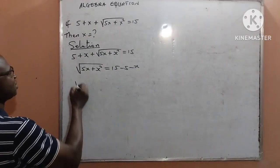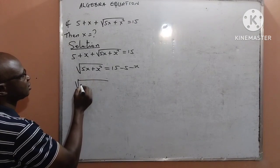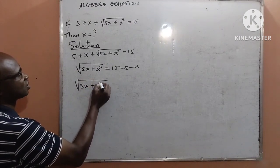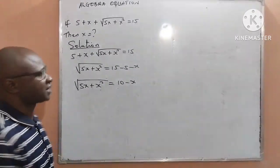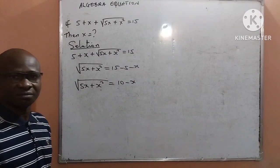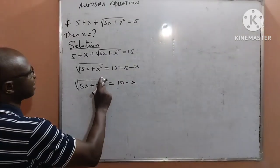This is now going to result to square root of 5x plus x squared equal to 10 minus x, that is 15 minus 5.